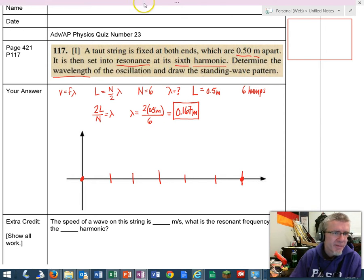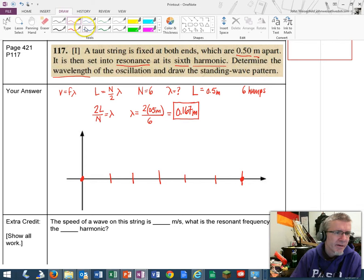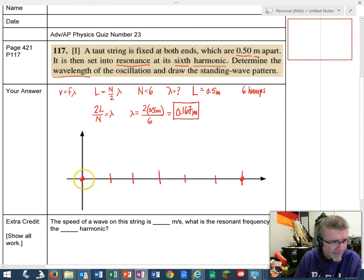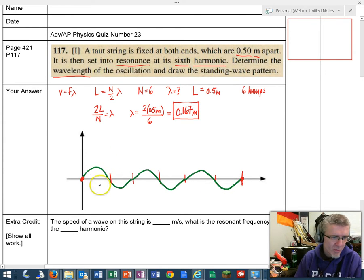We have to draw the standing wave pattern. Let me get my color out here. Let's draw green. There's a wave which has a maximum here, and then a minimum here, and then another wave that has a maximum here, and a minimum here, and then another wave that has a maximum here, and a minimum here.